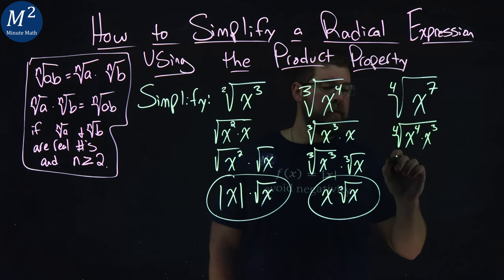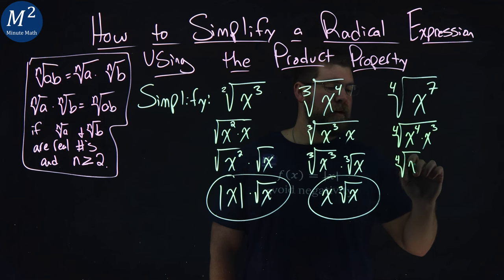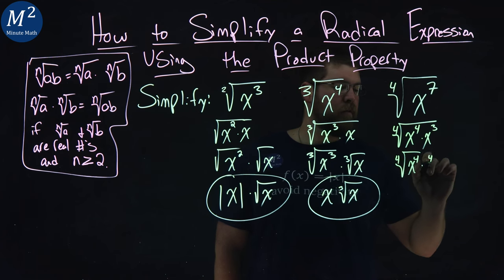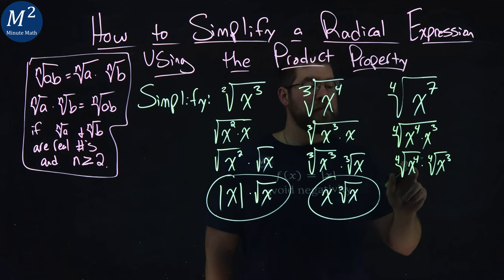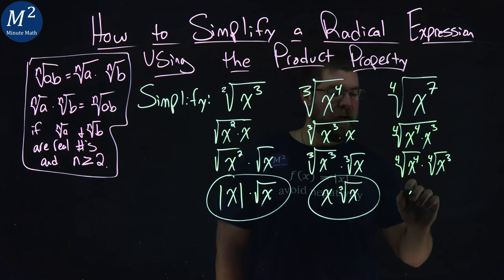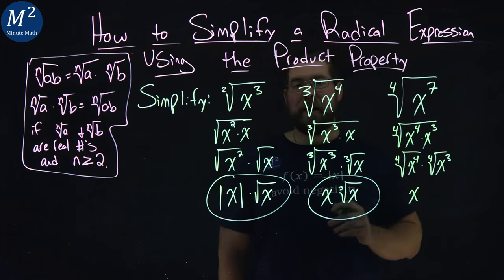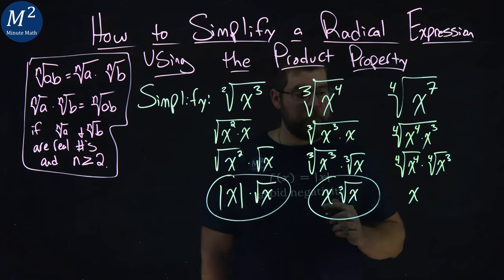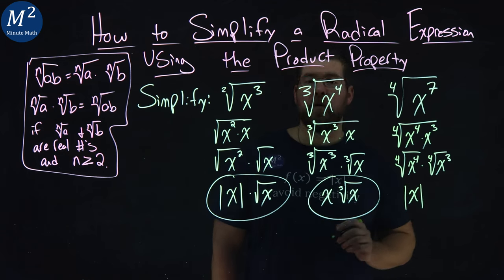The product property states that we can separate this out. Fourth root of x to the fourth times the fourth root of x to the third. Now the fourth root of x to the fourth cancels out. We have an x. But again, we have an even power issue like we had in the beginning. We need to put the absolute value over that.